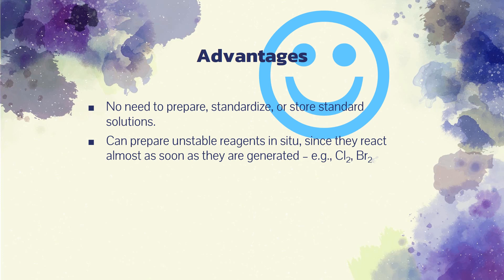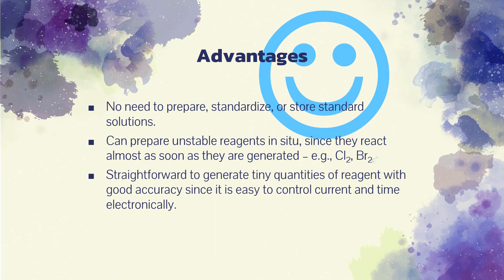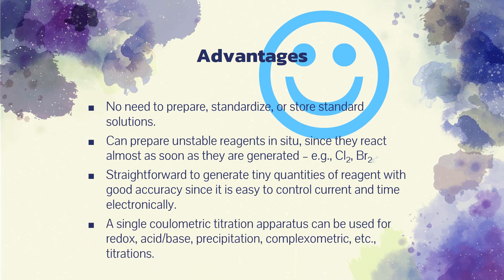Coulometric methods also excel when small amounts of analyte have to be titrated, because tiny quantities of reagent are generated with ease and accuracy through the proper choice of current. With conventional titrations, it is inconvenient and often inaccurate to use very dilute solutions and small volumes. A further advantage of the coulometric procedure is that a single constant current source provides reagents for precipitation, complex formation, neutralization, or oxidation-reduction titrations.